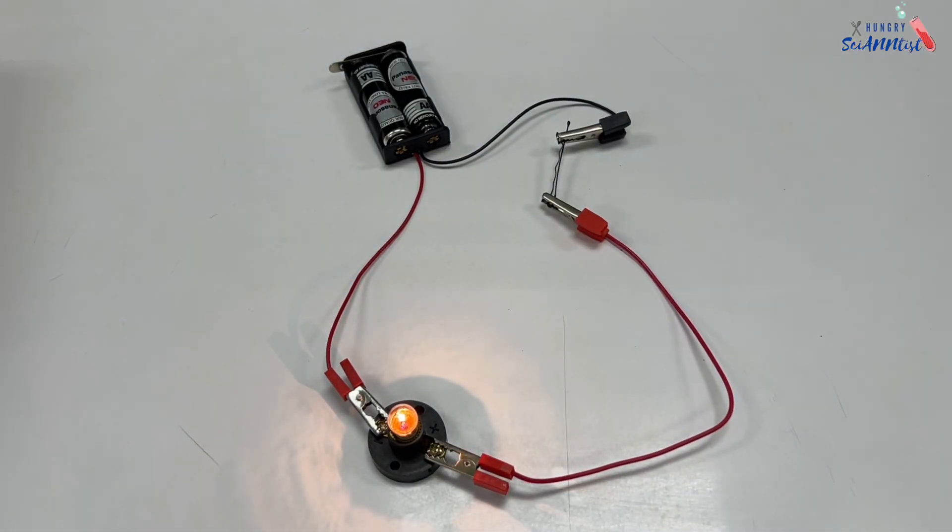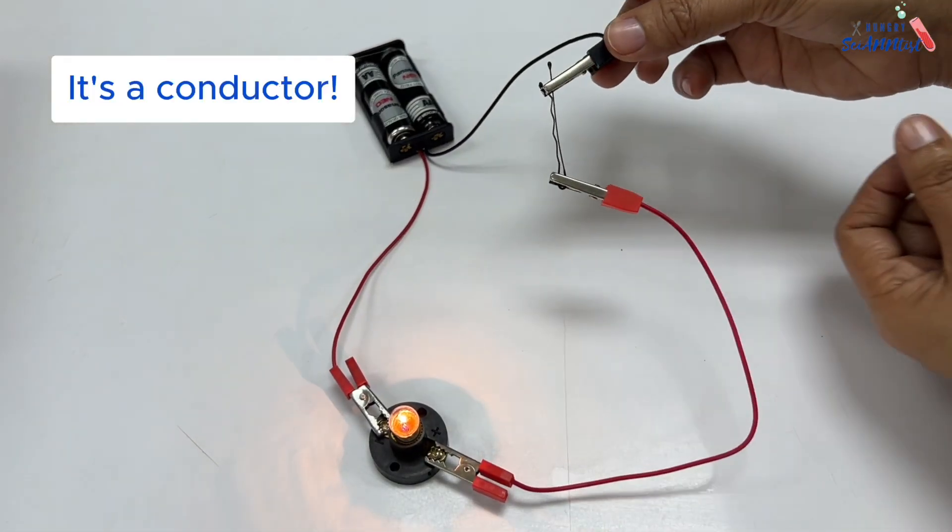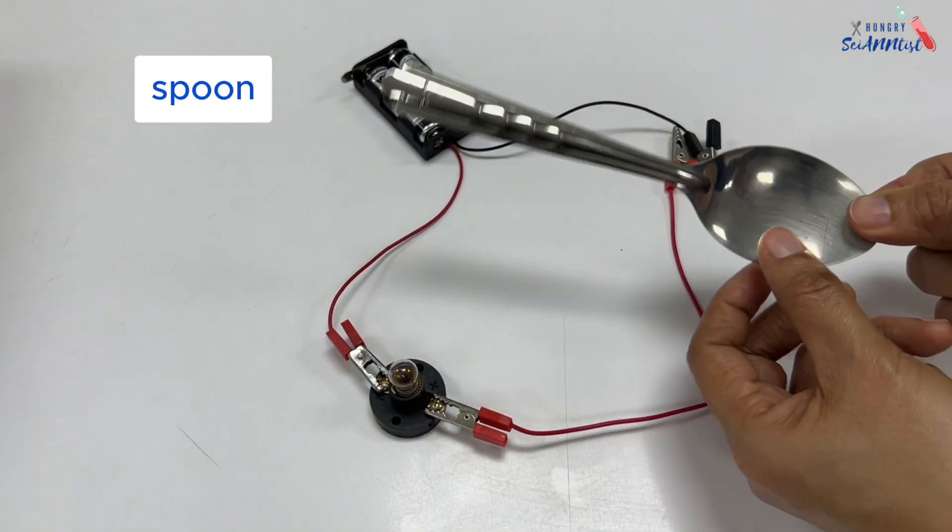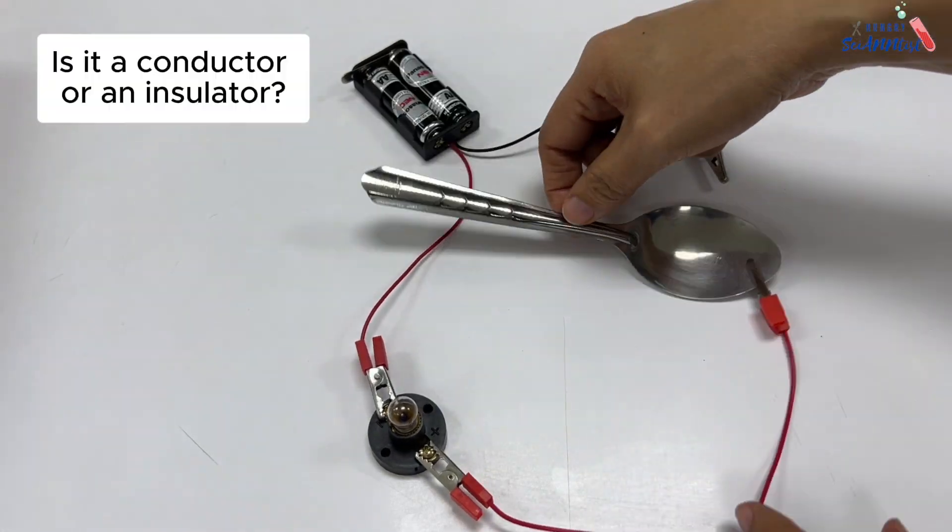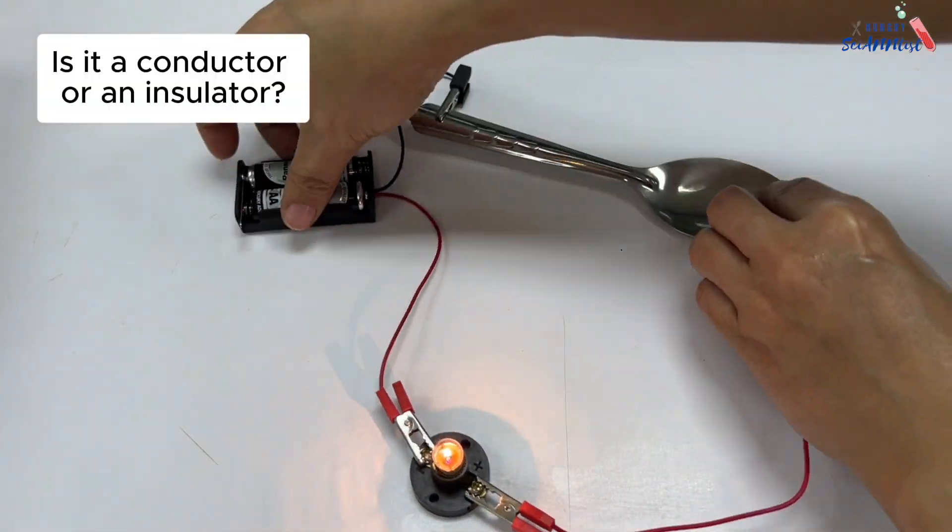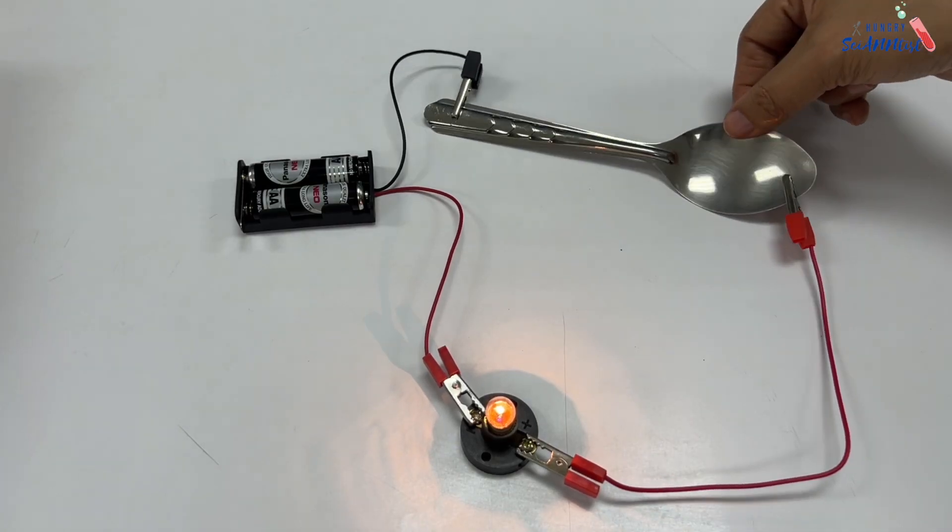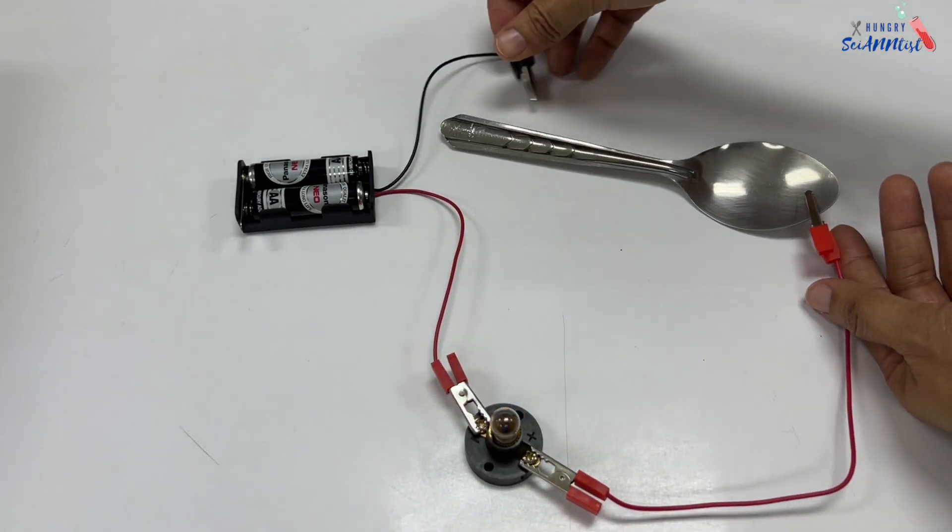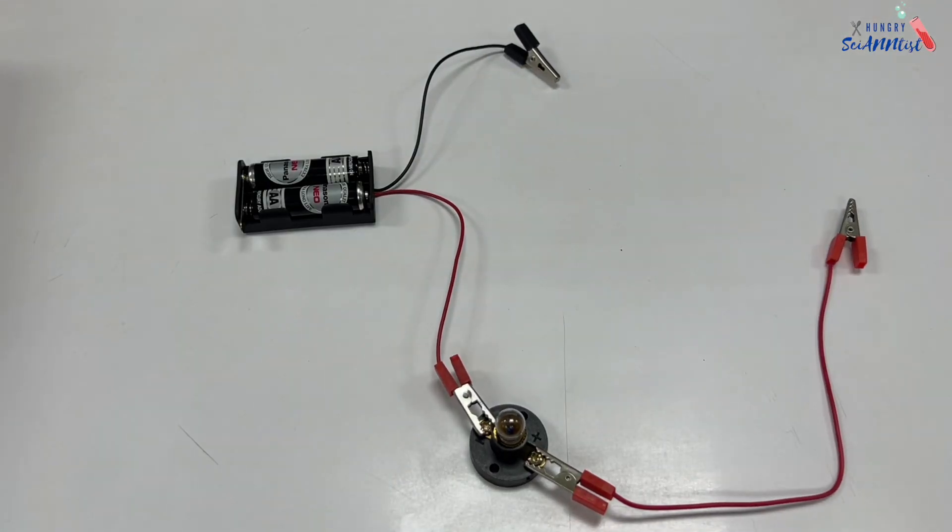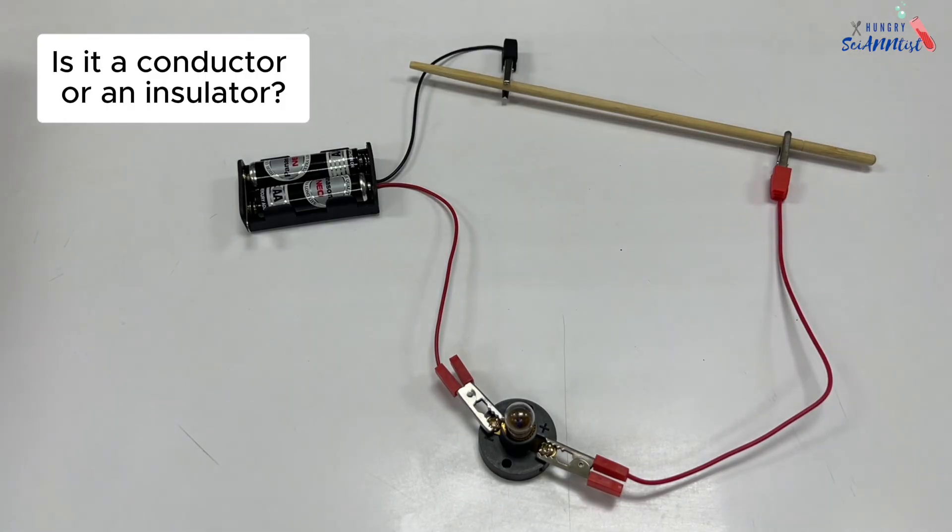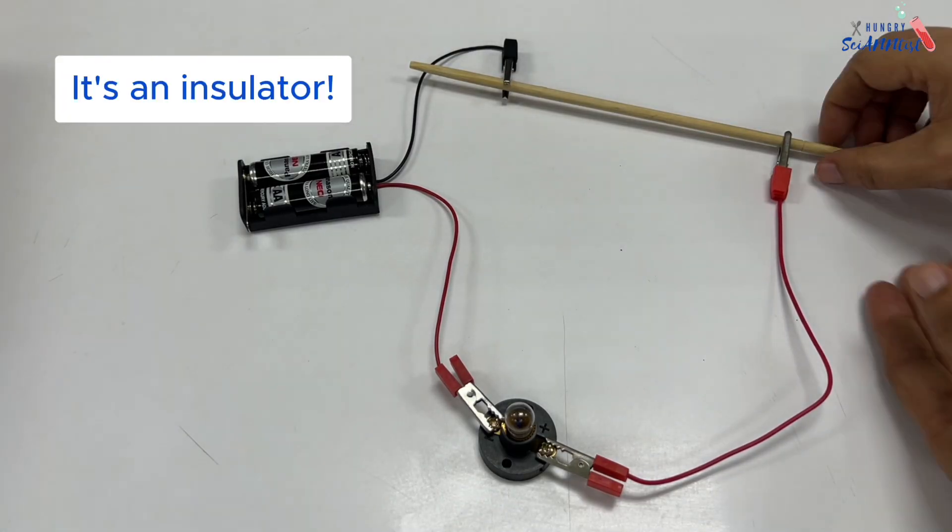A hair pin is a conductor. A chalk stick is an insulator.